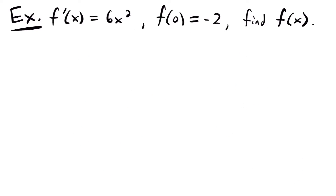Let's look at another example. Here we have a different way of presenting the same question. We're given that the derivative of some function f of x is equal to 6x squared, and the initial condition that the function evaluated at 0 is equal to negative 2. We want to find f of x. This might seem confusing because we're not given an explicit integral. But remember: we're looking to find f of x, and we know its derivative is 6x squared. So if we integrate the derivative, we will get our function. Thus f of x equals the integral of 6x squared dx.